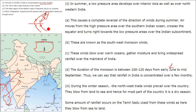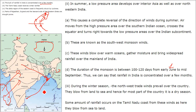Why does the Tamil Nadu coast receive winter rainfall? During the winter season, the northwest trade winds prevail over the country, blowing from land to sea, so they don't create rain over most of India — most of the country is in a dry season. But when these winds reach the Bay of Bengal they gather moisture, and a good amount of rainfall occurs on the Tamil Nadu coast as they blow from sea to land. This is the Coromandel region and it receives rain in winter because of this scenario.